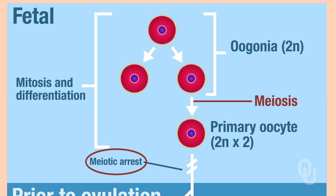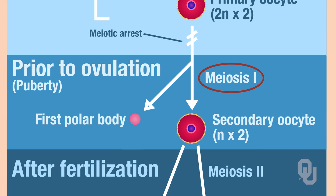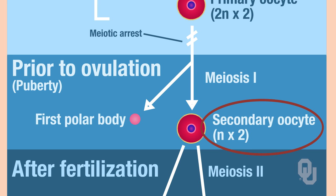The baby now reaches puberty. At puberty, meiosis I is completed. One primary oocyte per month completes meiosis I. When meiosis I is completed, a secondary oocyte — which is haploid — and a polar body are produced.